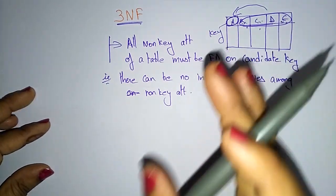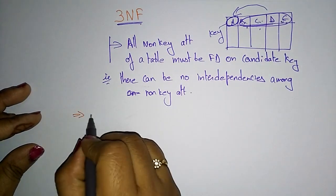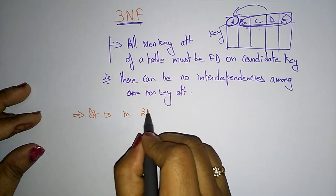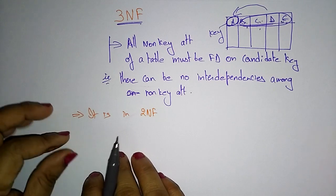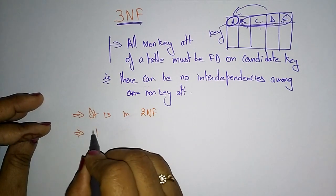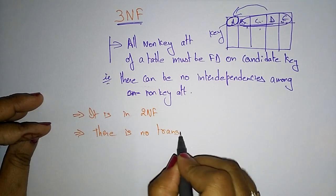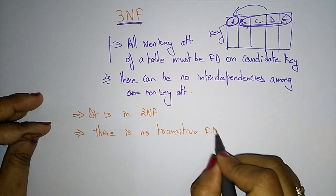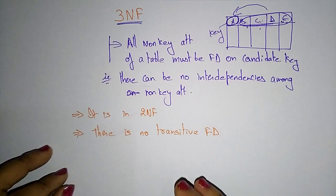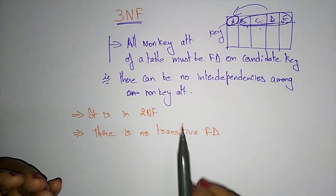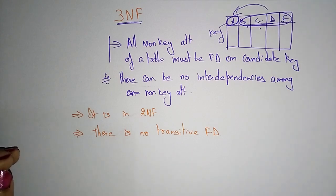If a table must be in 3NF, it has to follow some conditions. First, the table should be converted into second normal form (2NF). Second, there is no transitive functional dependency. Remember that in third normal form, you first have to convert the table into second normal form, and there must be no transitive functional dependency.